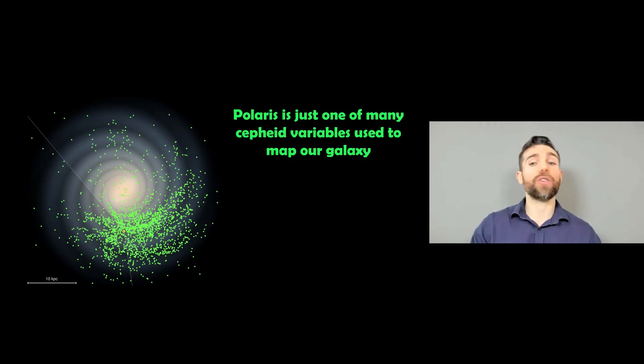So Polaris is just one of many variable stars that have been used to map out our own galaxy. We're here at the yellow point on that map in our Milky Way. And all of those green dots there are the same type of variable stars as Polaris. And because we can work a distance to them, we can then map out where they are and get more of our local environment and the structure there.